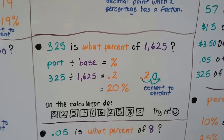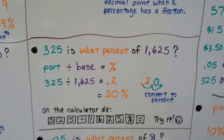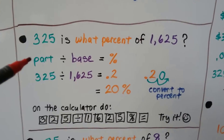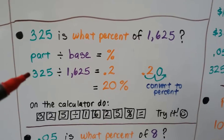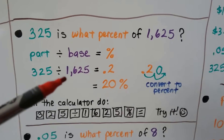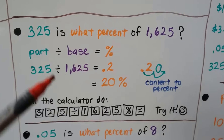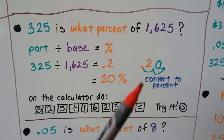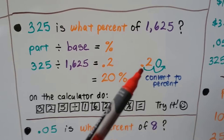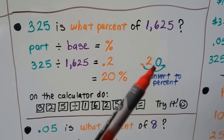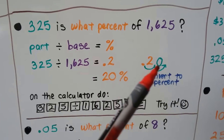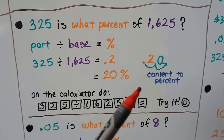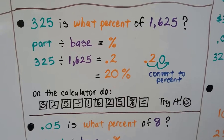Now: 325 is what percent of 1,625? We do the part divided by the base to get the percentage. So we do 325 divided by 1,625, and the calculator is going to show 0.2 — two tenths. We need to convert it to a percent by moving the decimal point back two places. We now have an empty place value, so we put a 0 there as a placeholder and get 20. We add the percentage sign: 20 percent.